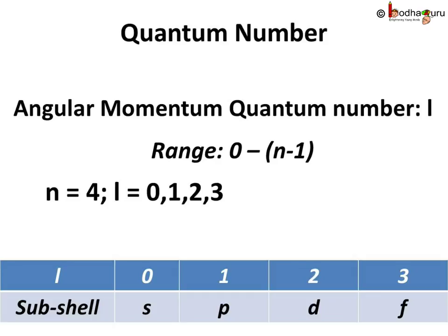Thus, for the fourth shell, that is shell n equals 4, there can be four sub-shells: s, p, d, and f. We see the angular momentum quantum number is denoted by L and it can take values in the range of 0 to n minus 1.